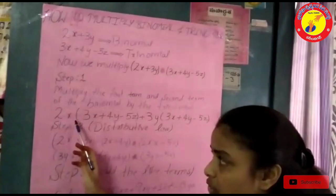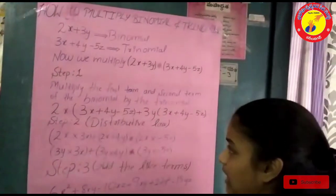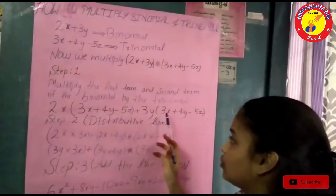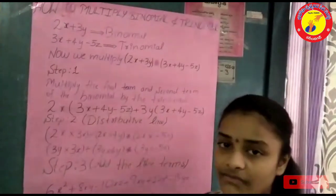See here: 2x into 3x plus 4y minus 5z, plus 3y into 3x plus 4y minus 5z.